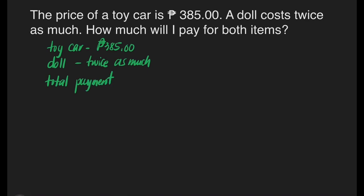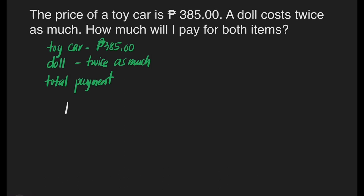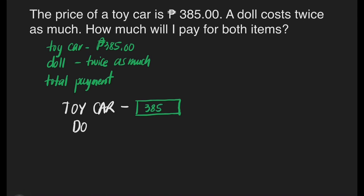We can use the block model approach in solving this problem because our students can visualize it easily. We will have first the toy car — one box with 385 pesos inside. Then we'll have the doll, which costs twice as much — that's going to be two boxes with 385 in each box. So we can see that the doll really costs twice as much, and the toy car is 385 pesos.